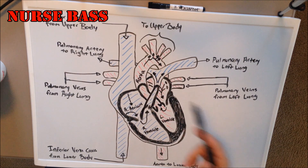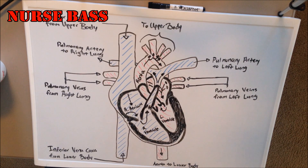How blood flows through the heart, goes to the lungs, becomes oxygenated, comes back to the heart, and then gets pumped out to the body.